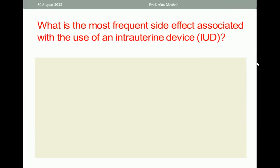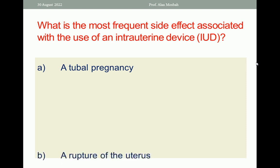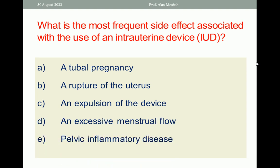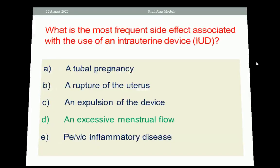Let us go to the next question. What is the most frequent side effect associated with the use of an intrauterine device? A. Tubal pregnancy. B. Rupture of the uterus. C. Excessive menstrual flow. E. Pelvic inflammatory disease. The right answer here is excessive menstrual flow.